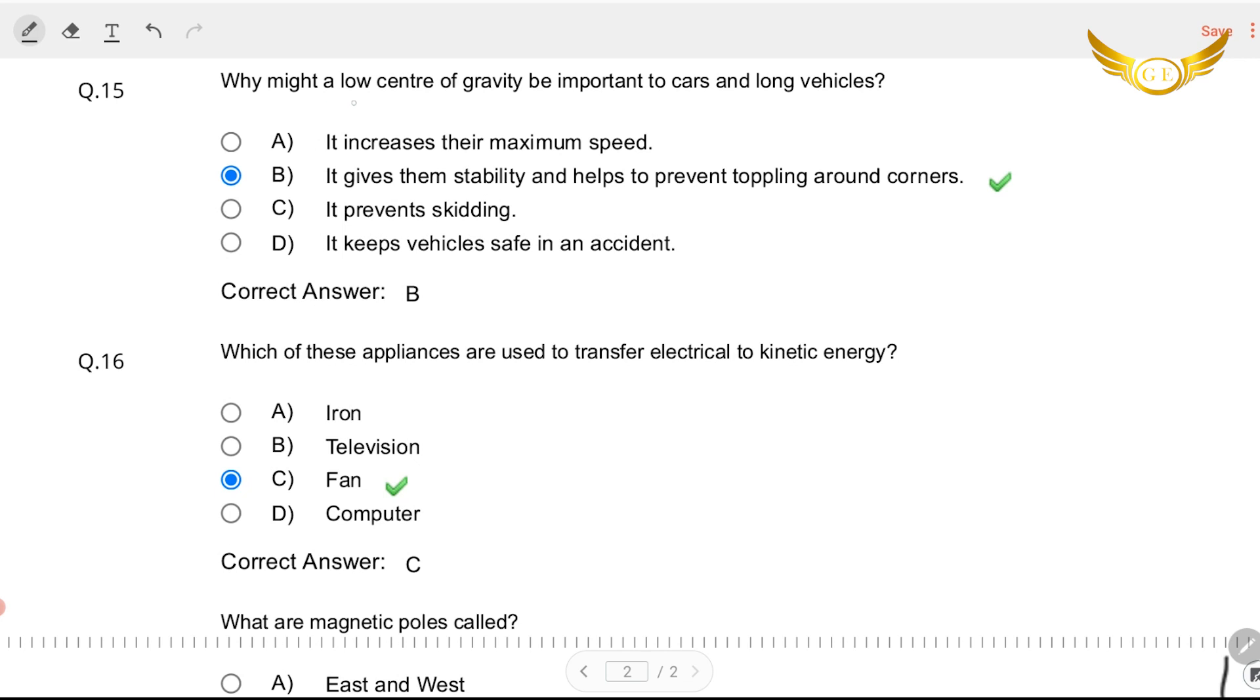Let's see the next question. Why might a low center of gravity be important to cars and long vehicles? It increases their maximum speed. It gives them stability and helps them to prevent toppling around corners. It prevents skidding and it keeps the vehicle safe in accident. Well yes it is more for stability. Center of gravity, stability is important for your stability. So the answer is it gives them stability and helps to prevent toppling around corners.